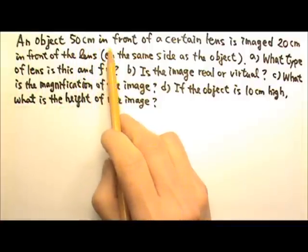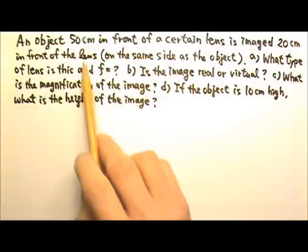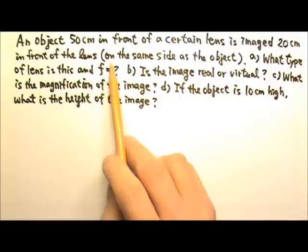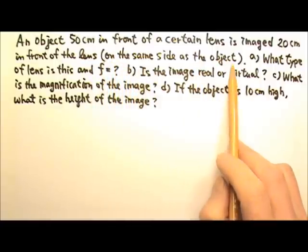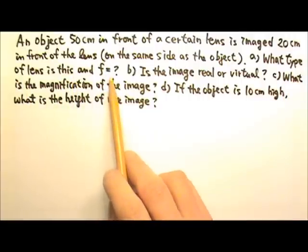An object 50 cm in front of a lens is imaged 20 cm in front of the lens, which means the image is on the same side as the object. Part A: What type of lens is this, and what is its focal length?